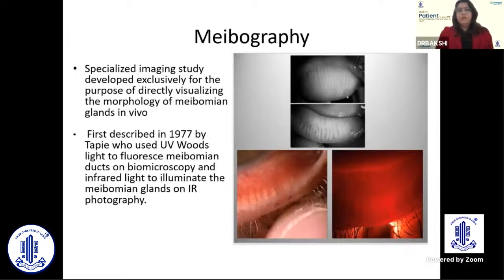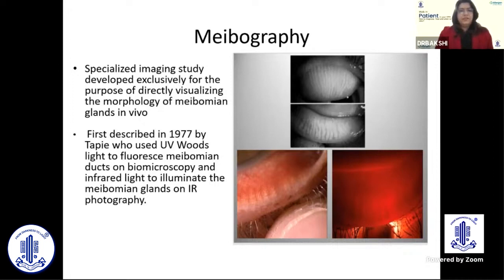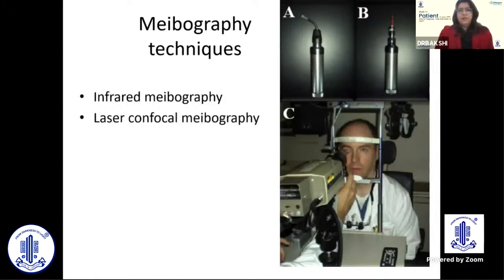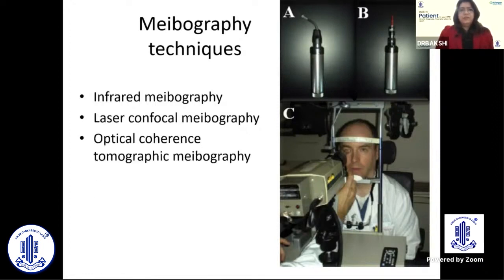Meibography is a very important tool in the examination of lids and the study of MGD. It was first described in 1977, using UV Wood's lamp to fluoresce meibomian glands on biomicroscopy and infrared light for photography. Looking back at the history, we have contact infrared meibography, laser confocal meibography, and OCT tomographic meibography.